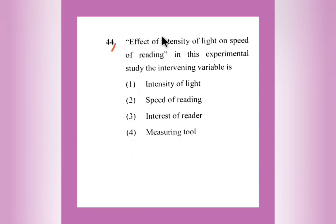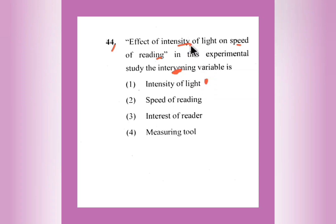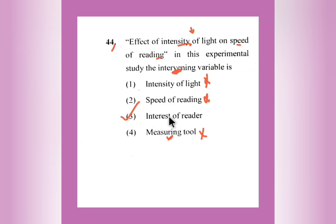Question number 44: Effect of intensity of light on speed of reading — in this experimental study, the intervening variable is. Intensity of light is one variable and speed of reading is the second. The intervening variable acts between these two. Intensity of light and speed of reading are not themselves the intervening variable. A measuring tool is used to measure what happens. The intervening variable is the interest of the reader — it shows how the interest of the reader changes between intensity of light and speed of reading.